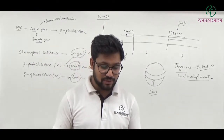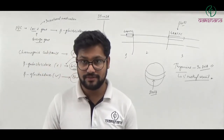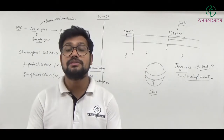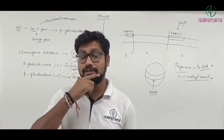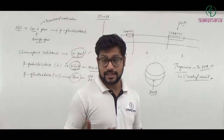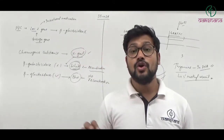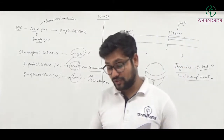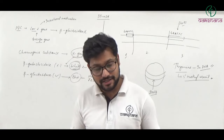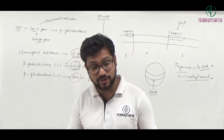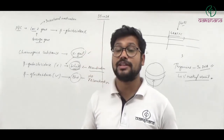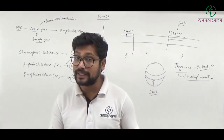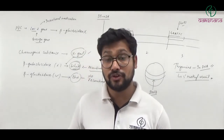Question number twenty-five: Severo Ochoa enzyme. Marcel Nirenberg used the Severo Ochoa enzyme to synthesize and understand the genetic code. The Severo Ochoa enzyme is actually an RNA polymerase, also called polynucleotide phosphorylase. The first option states polynucleotide phosphorylase, and the second option calls it DNA-dependent RNA polymerase — both are correct descriptions. So question number twenty-five's fourth option, both 1 and 2, is the right answer.